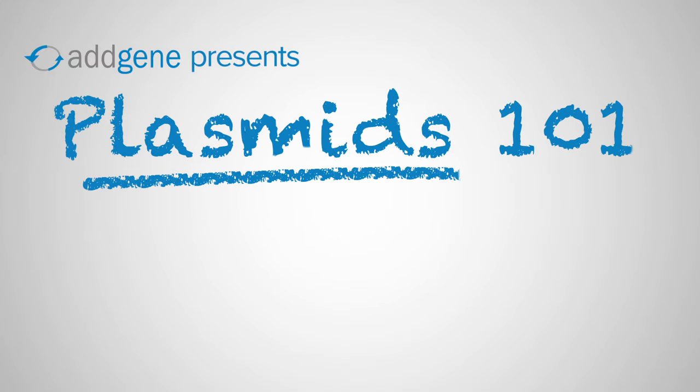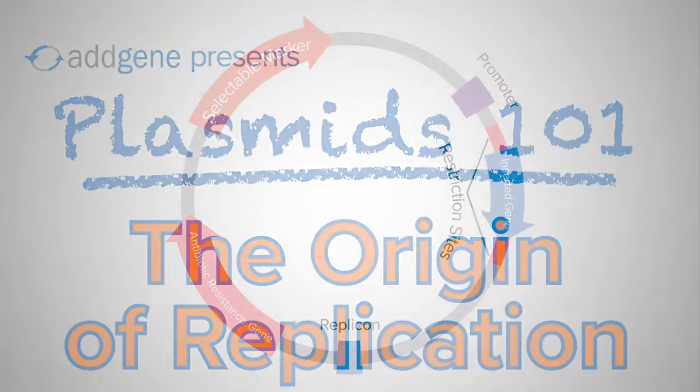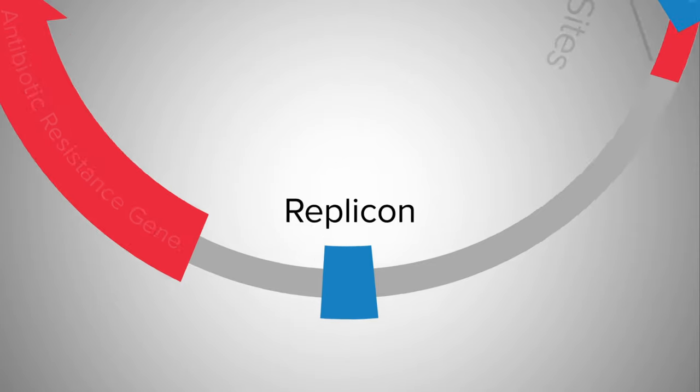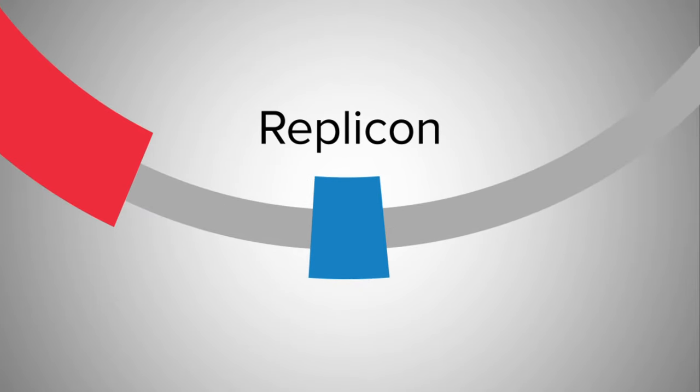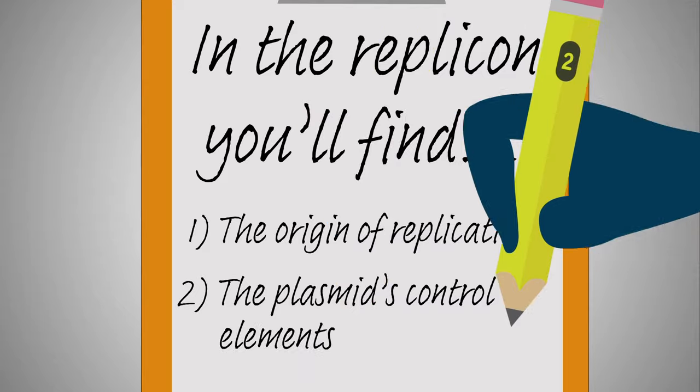The answers lie in the origin of replication. Every plasmid has an area known as the replicon. Here, the mechanism of replication can begin. In the replicon, you'll find the origin of replication, as well as all its control elements.